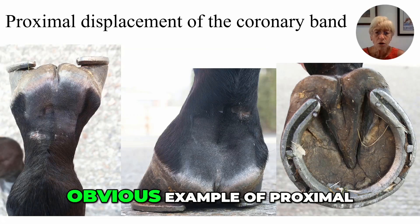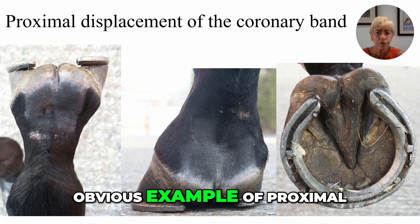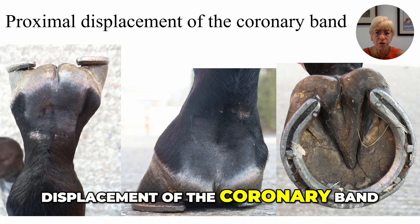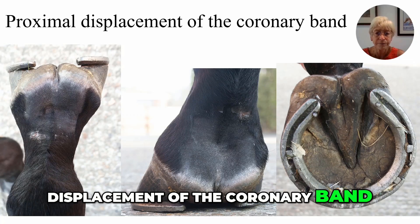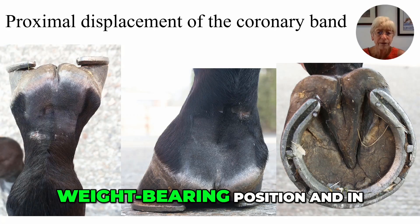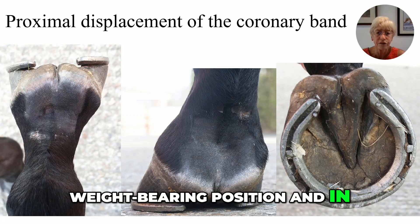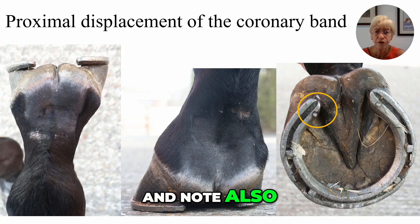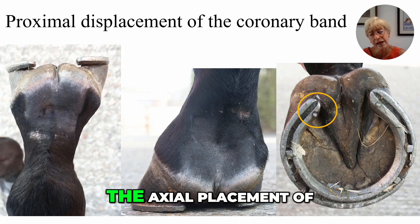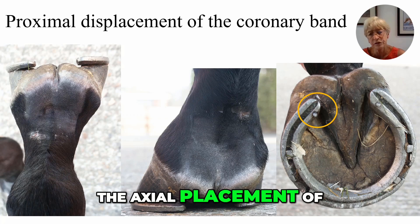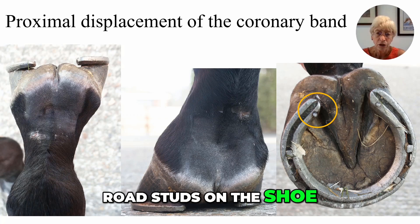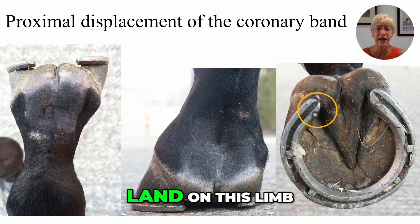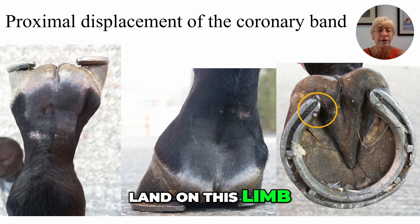This is a more obvious example of proximal displacement of the coronary band, seen both in the weight-bearing position and in the non-weight-bearing position. Note also the axial placement of road studs on the shoe, which is not good for the way in which the horse will land on this limb.